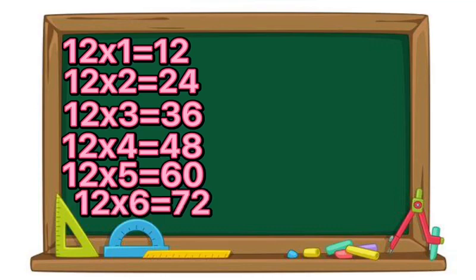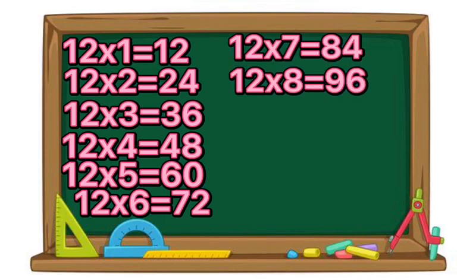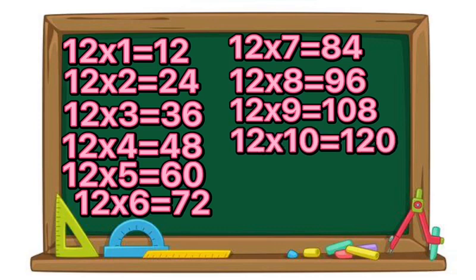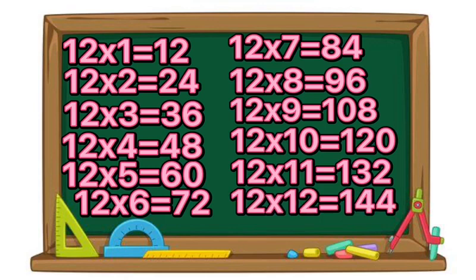12 times 6 equals 72. 12 times 7 equals 84. 12 times 8 equals 96. 12 times 9 equals 108. 12 times 10 equals 120. 12 times 11 equals 132. 12 times 12 equals 144.